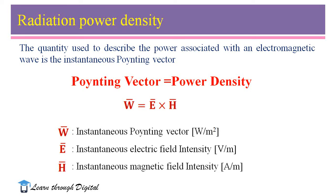The instantaneous Poynting vector is W vector, equal to E vector cross H vector. When the electromagnetic wave travels in space, the power density of radiation by an antenna is related to electric and magnetic fields: W vector equals E vector cross H vector, where W vector is the instantaneous Poynting vector in watts per square meter, E vector is the instantaneous electric field intensity in volts per meter, and H vector is the instantaneous magnetic field intensity in amperes per meter.